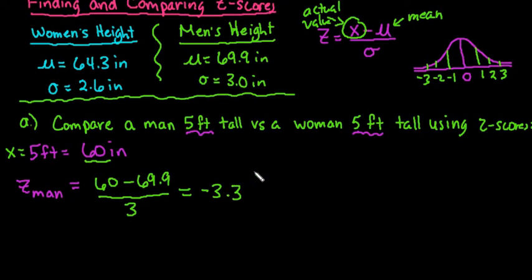And I will discuss this in just a second, I'm going to make sure that I find both of them first. The z-score for females or women, we would take the 60 inches, because remember that we're comparing the 60, minus the 64.3, divided by 2.6. So when I do that, I get negative 1.65.